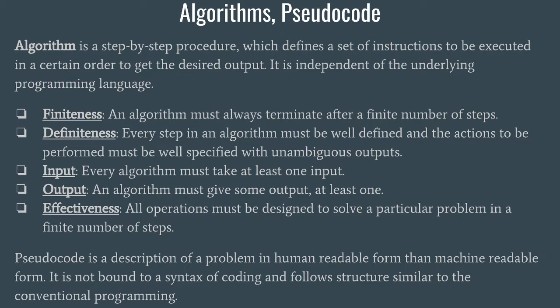Let us first understand what algorithms and pseudocode mean. An algorithm is a step-by-step procedure — you must already know that in order to perform any operation, be it making a cup of tea or writing some piece of code, we have to follow a process. Algorithm is a step-by-step guideline, a process or a flow in which we approach our problem. The definition says: an algorithm is a step-by-step procedure which defines a set of instructions to be executed in a certain order to get the desired output.